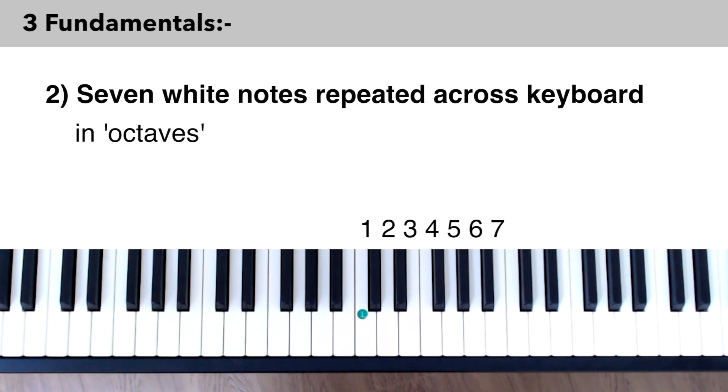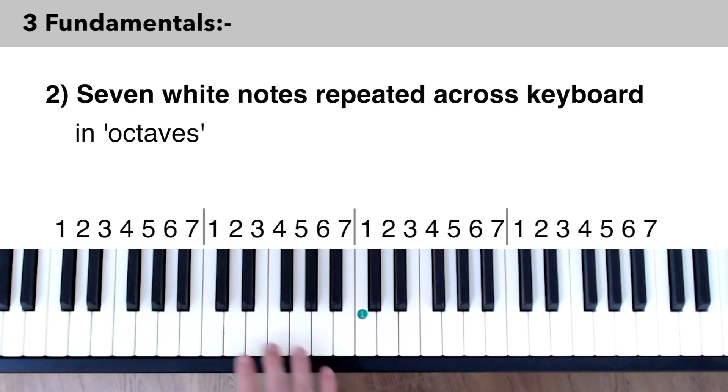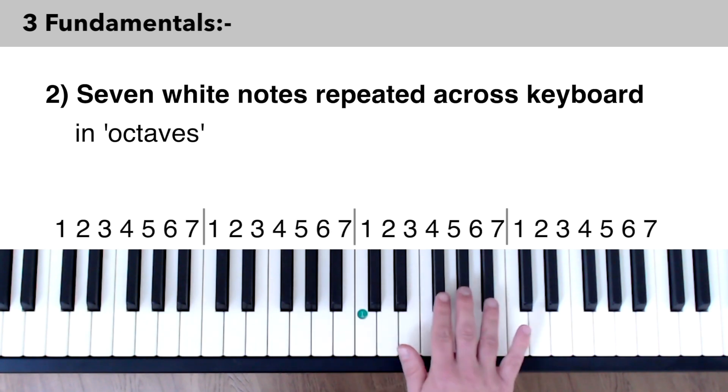Number two: the piano keyboard reflects this scale with repeating groups of seven white notes either called by letters or by numbers. Each repeating pattern of these seven keys is called an octave. In between each group of seven white notes are five black keys in patterns of two and three across the keyboard. These black keys help you identify which white key is which.